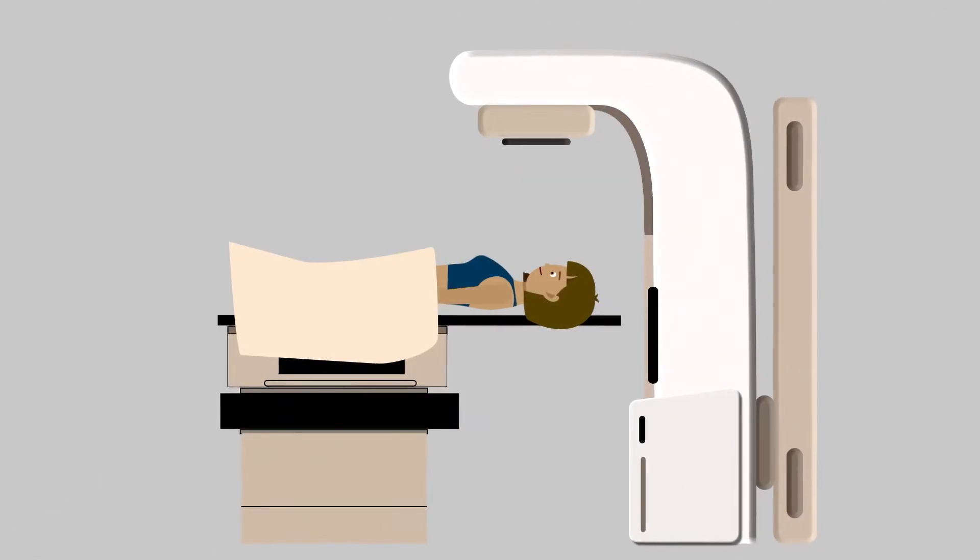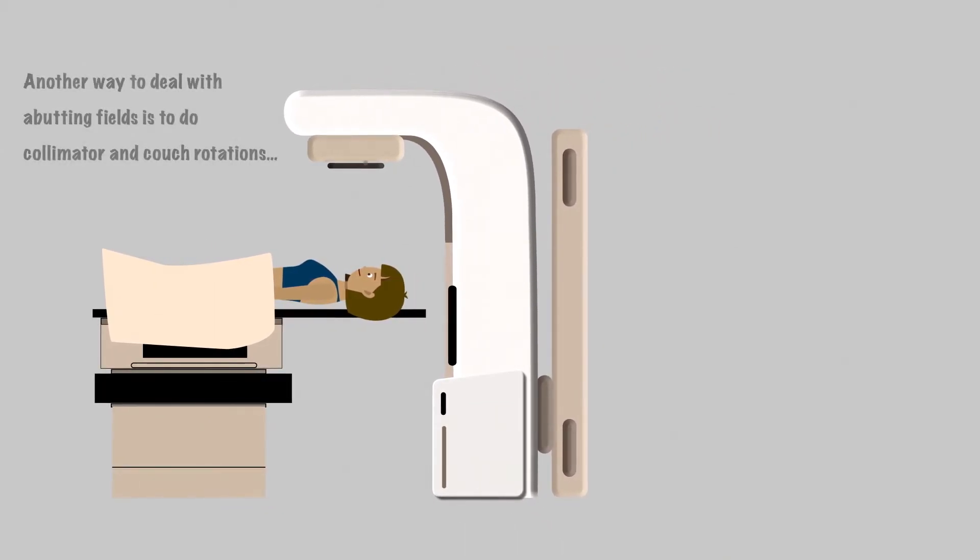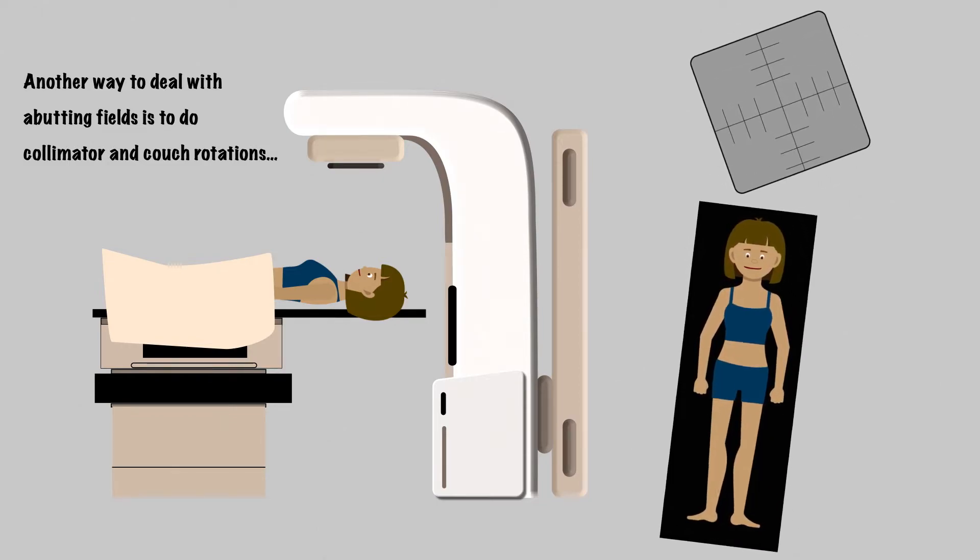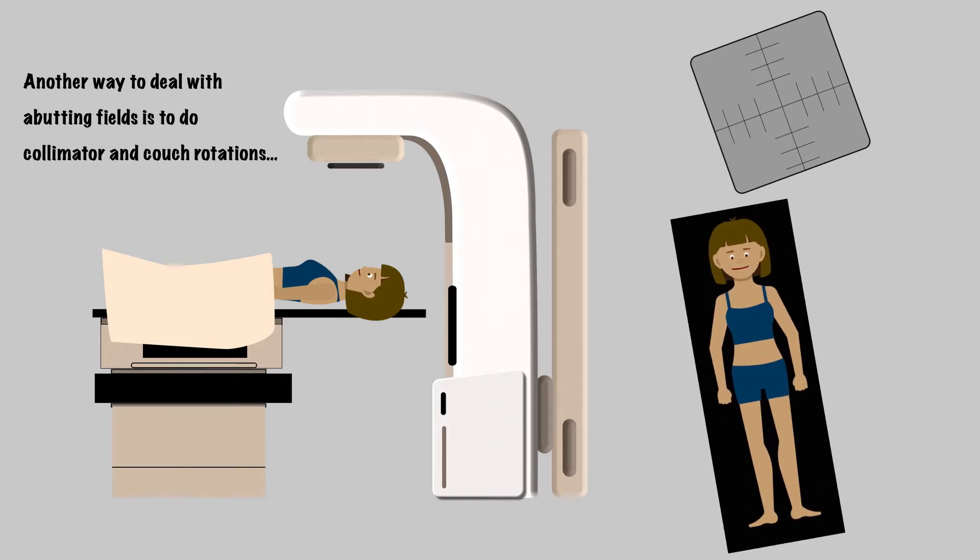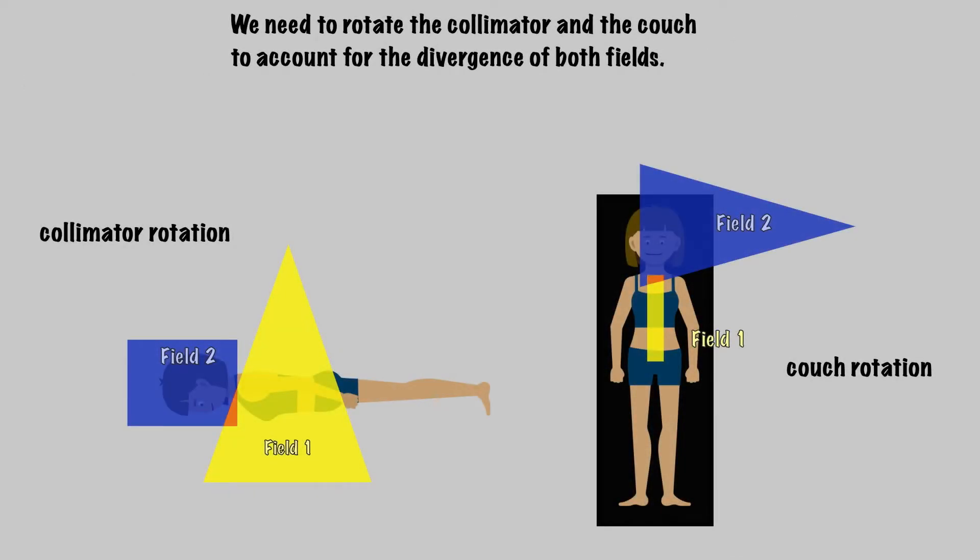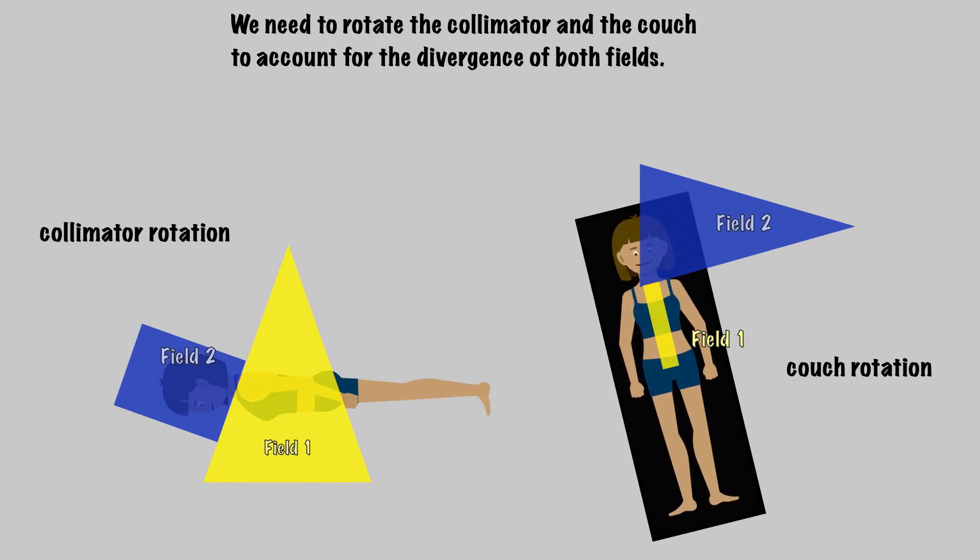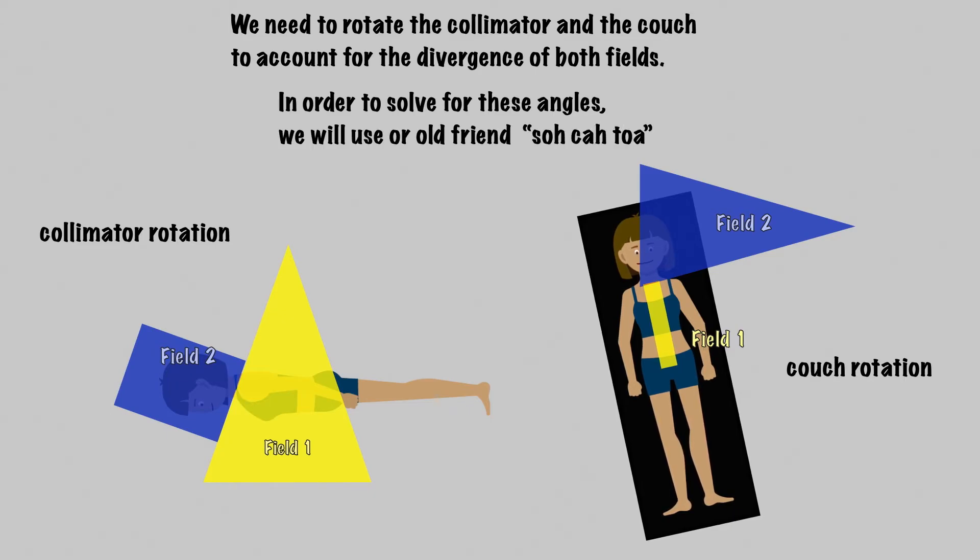The other way to match abutting photon fields is to use collimator and couch rotations. These rotations do not utilize a skin gap, but actually match the divergence of the beams so there aren't significant hot or cold spots, and can be used in many scenarios with a variety of beam arrangements. The goal here is to rotate the collimator of field 2 to match the angle of divergence from field 1, and to rotate the couch to match the angle of divergence from field 2. In order to solve for these angles, we will use our old friend SOHCAHTOA.